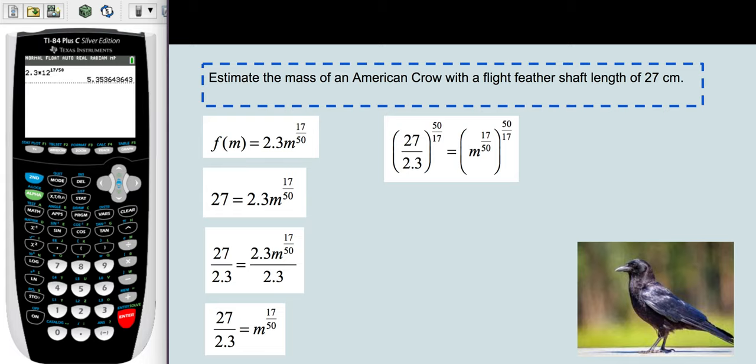On the right-hand side of the equation, 17/50ths and 50/17ths will simplify so that you just have m to the 1, or just m left over. On the left-hand side, that computation needs to be done very carefully.